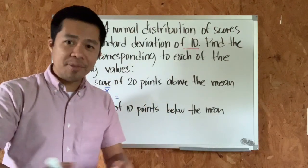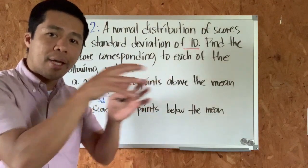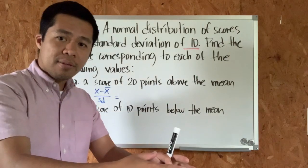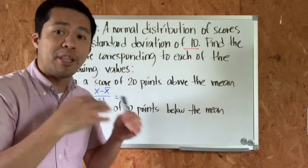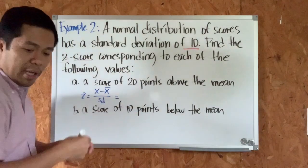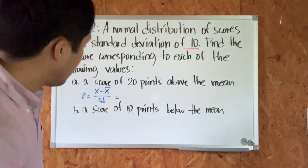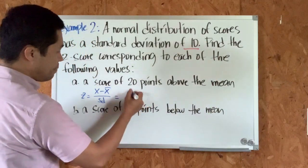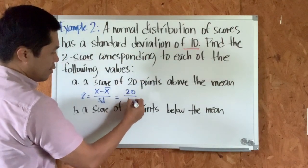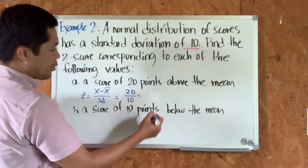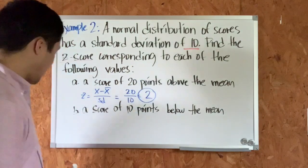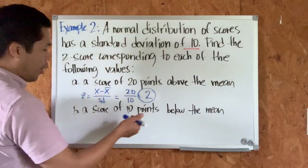What we know is that the observation is 20 points above the mean. So if we subtract that score from the mean, the difference is positive 20 because it's 20 points above the mean. We can replace the entire numerator with positive 20, because it's above the mean. Our standard deviation is 10, so this equals 20 divided by 10, which is equal to 2.